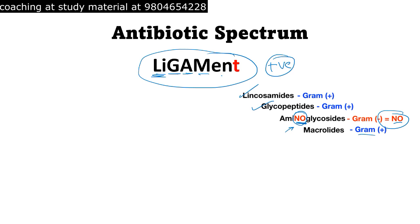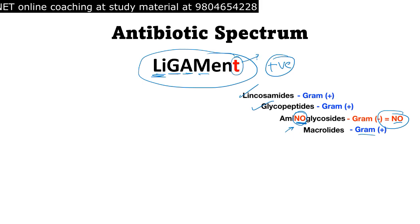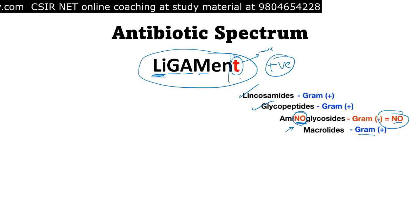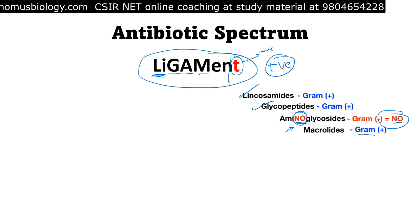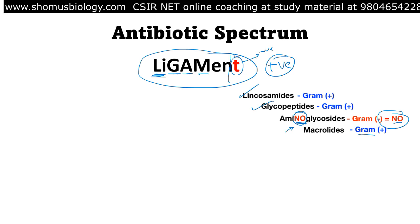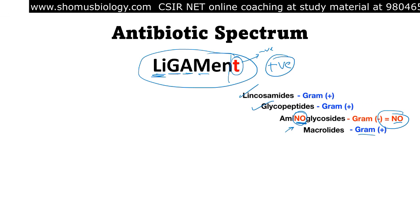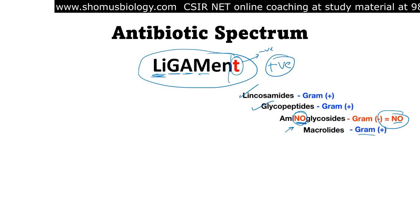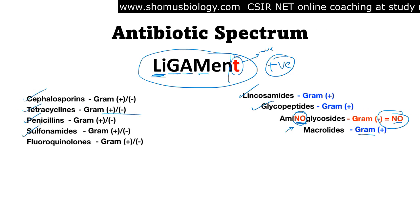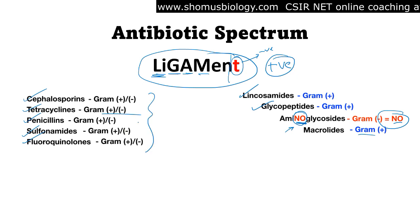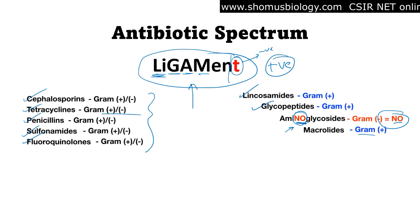At the end we have 'T' for Tetracycline, which is against gram negative. Remember, there are a total of 10 classes. These are the four classes from LIGAMENT. Apart from that, all six other classes — Tetracycline, Cephalosporins, Penicillin, Sulfonamides, Fluoroquinolones, and others — are against both gram positive and gram negative bacteria.